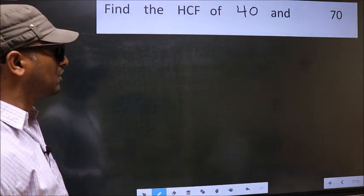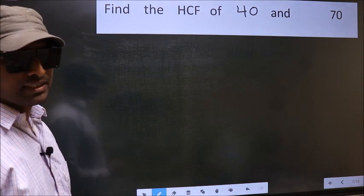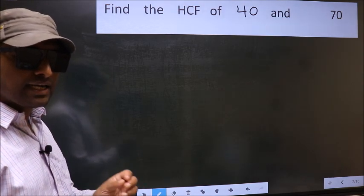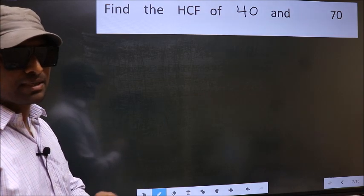Find the HCF of 40 and 70. To find the HCF, we should do the prime factorization of each number separately.